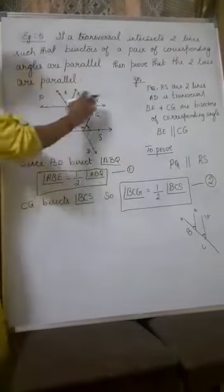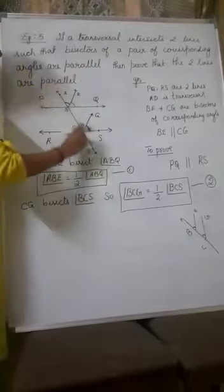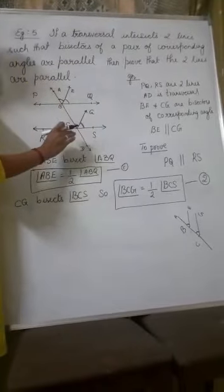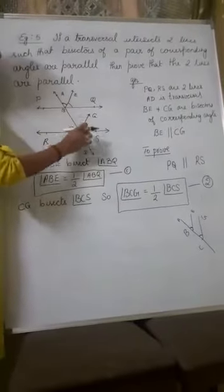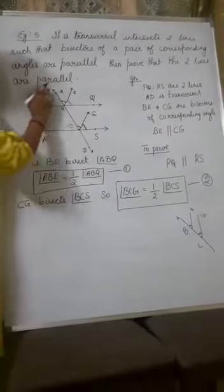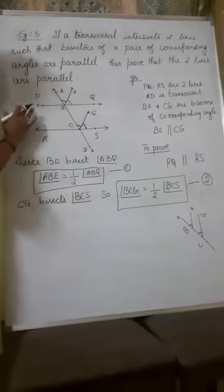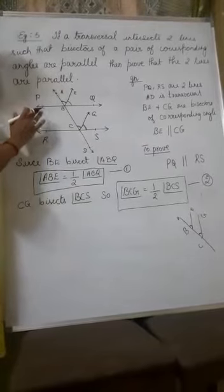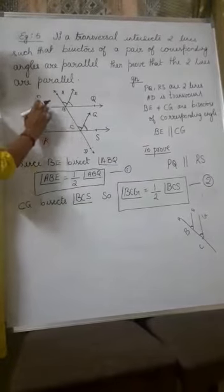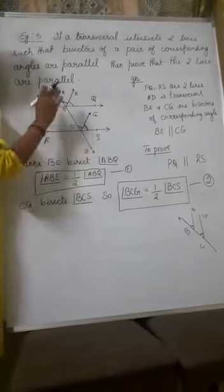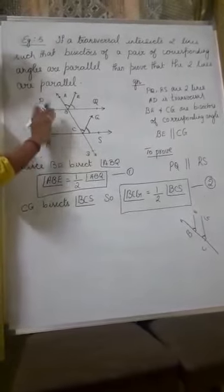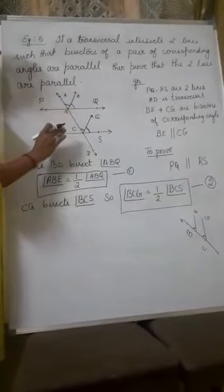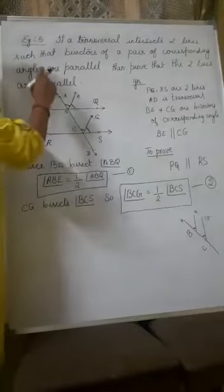Whenever a line is cut by a transversal, corresponding angles will be formed — four pairs of corresponding angles will be formed. But when the lines are parallel, the corresponding angles will be equal. Otherwise, the corresponding angles will not be equal.